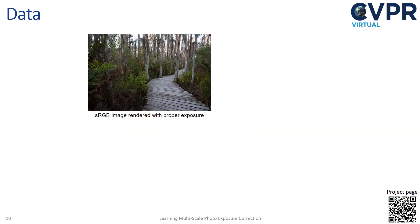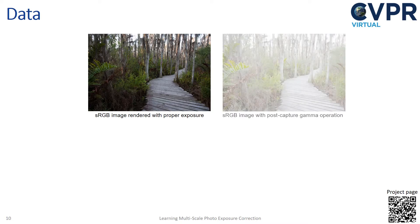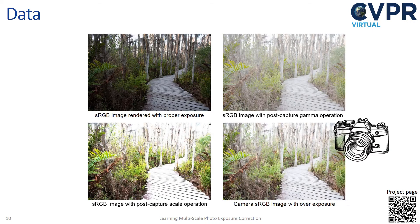To begin, we need to generate a paired dataset of properly exposed images and corresponding poorly exposed images. Many prior works did this by directly modifying the sRGB image using tonal adjustments such as gamma or linear scale operators. These synthetic results do not look like errors that would be produced on the camera. The arrows show regions of noticeable differences. This is because exposure errors happen early in the camera processing pipeline.